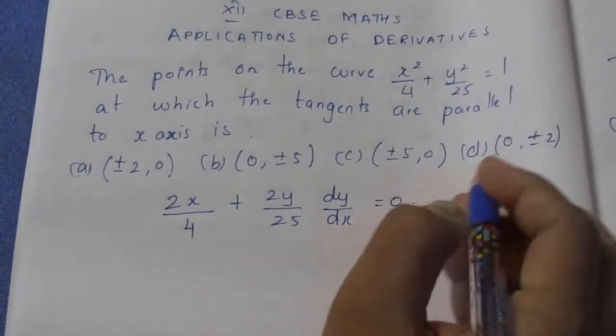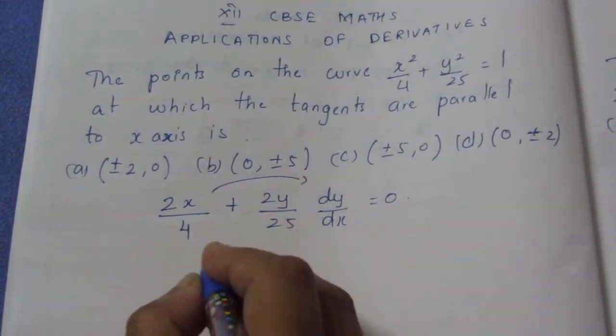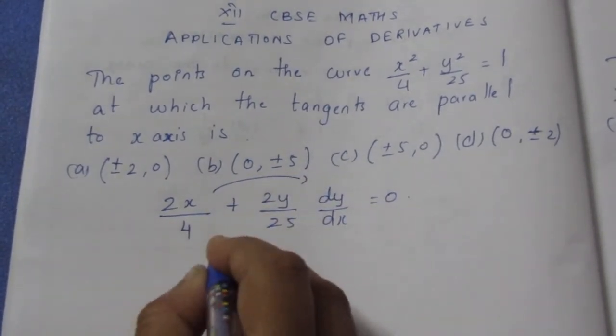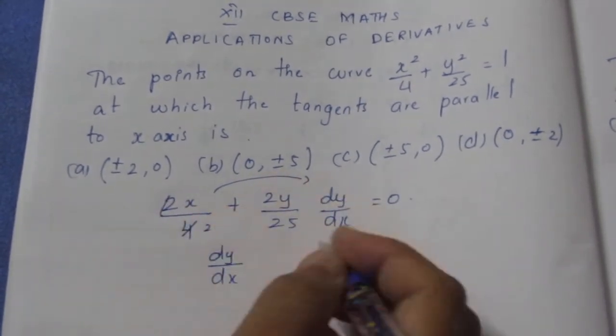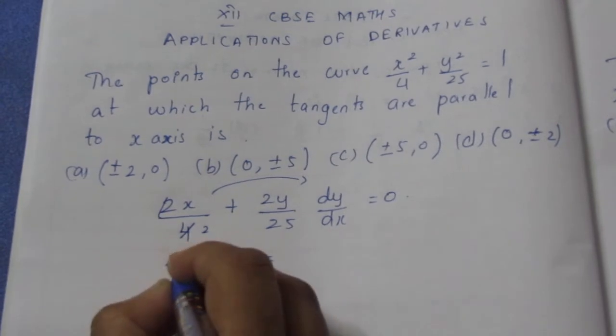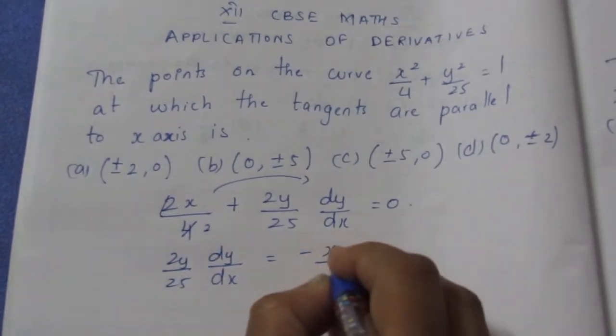This is equal to 0 because the constant term becomes 0. Bringing this to the side, 2y / 25 · dy/dx. This we can cancel and bring it. This is equal to -x / 2.